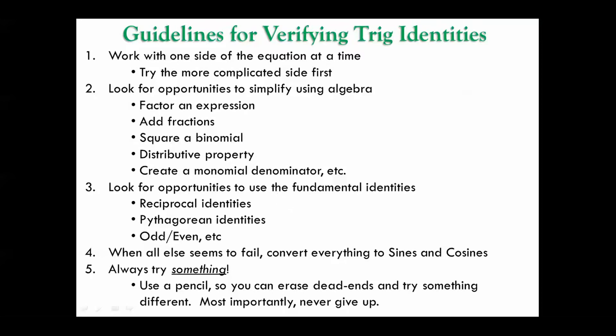Number three, look for opportunities to use the identities that are really simple. In other words, don't go right to the more complicated ones like double angle formula and half angle formula and all that crazy stuff. A lot of times your verifications can be done by just using your basic reciprocal identities and Pythagorean identities and maybe even odd even.